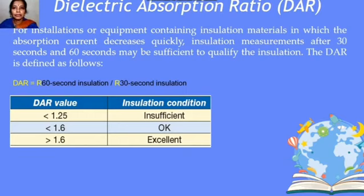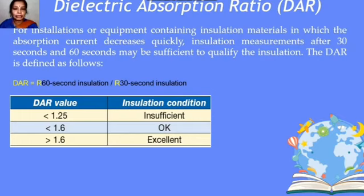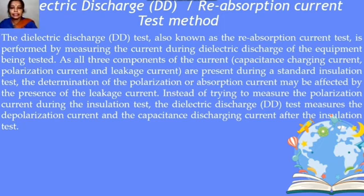The Dielectric Absorption Ratio (DAR) test is used for insulation materials where absorption decreases quickly. Insulation measurements after 30 seconds and 60 seconds may be sufficient. DAR = R60s / R30s. If DAR is less than 1.25, insulation condition is insufficient; if between 1.25 and 1.6, it is acceptable; if greater than 1.6, it is excellent.